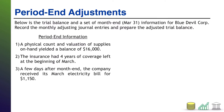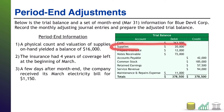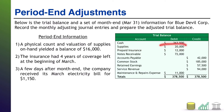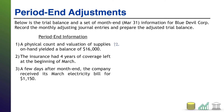Period end information, number one: a physical count and valuation of the supplies on hand yielded a balance of $16,000. This is very common — you go count inventory and supplies at period end, compare it to what's currently on your balance sheet, and adjust as needed. The trial balance says there are $20,000 in supplies on hand, so we need to reduce our supply balance by $4,000 because the physical count is telling us what we really have. This $20,000 is what the system thought we had. So our adjusting journal entry on 3/31: we have to lower supplies by $4,000. To lower supplies, we credit it $4,000.